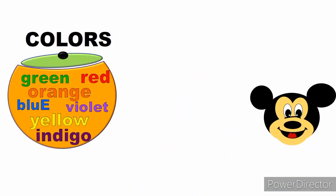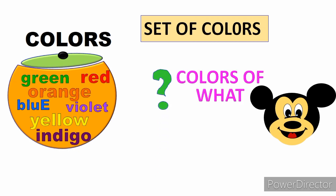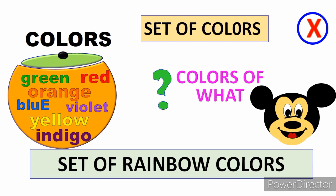For the group of colors, 'set of colors' is not well-defined because it's unclear which colors are included. But 'set of rainbow colors' is well-defined because we know there are seven specific colors: red, orange, green, blue, violet, yellow, and indigo. Therefore, 'set of rainbow colors' is well-defined.